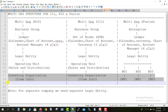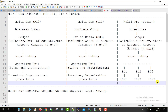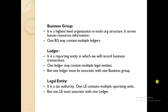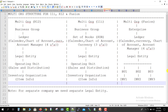Now step by step we are going to see what the Business Group is, what the Enterprise is, what the Ledger is, and so on. Moving to my slides — so Business Group is the highest level of an organization in the multi-org structure. Like one parent organization having multiple child organizations under it — that is nothing but the Business Group. And we can say that the Business Group in 11i/R12 is equivalent to the Enterprise in Fusion. Just the nomenclature is changed; most things remain the same.